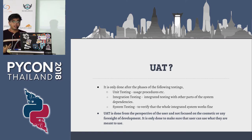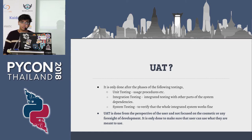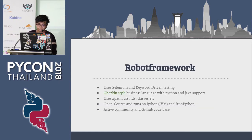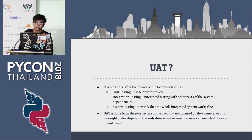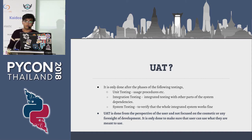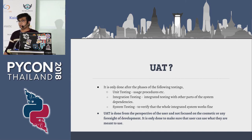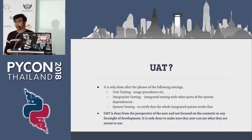It's done on the GUI side, and it's only done to make sure that the user can use what they are meant to use. Getting into Robot Framework — it's a very small thing, you can download it using PIP.